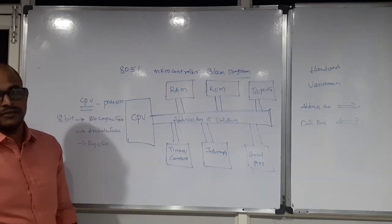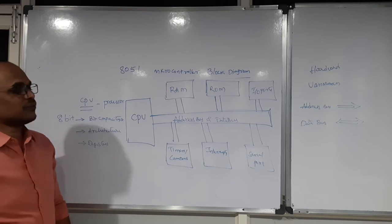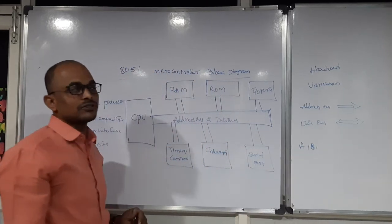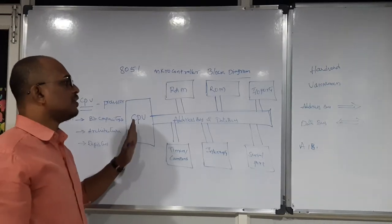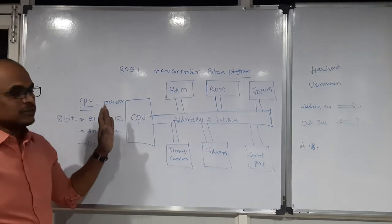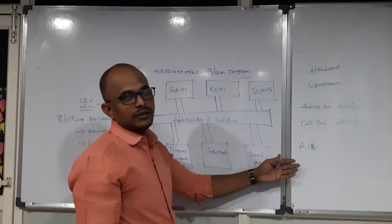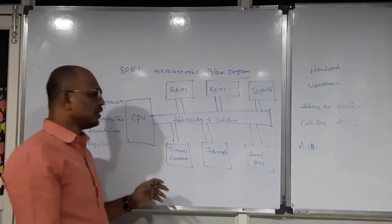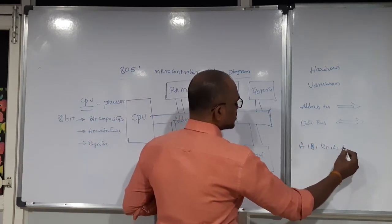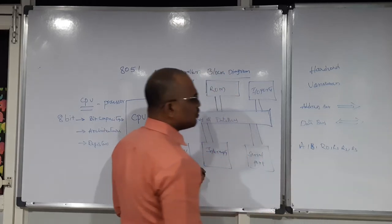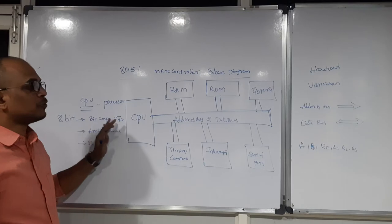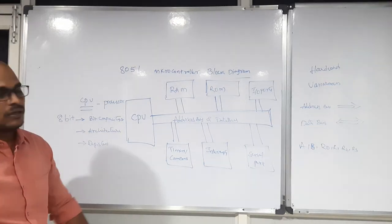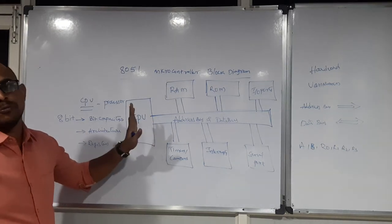The third point is registers. Every processor comes with a list of registers — like A, B, C, D — which you may have studied in basic processors like 8085 and 8086. From microcontrollers also, the CPU supports some list of registers; the names may be different, but every processor supports some list of registers to store data. For example, A, B, R0 are registers of the 8051 processor. These three points — bit capacity, architecture, and registers — are very important about every processor, whether it is part of a controller or an individual processor.